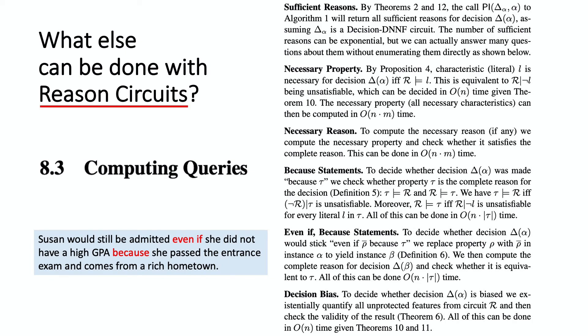So this notion is very important. It is an abstraction of why a decision was made. And if you have it in a tractable form, then you can do all kinds of interesting things.